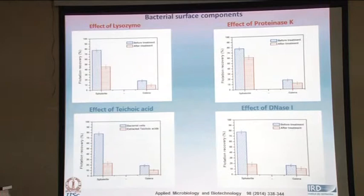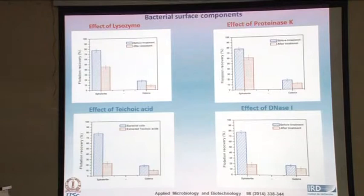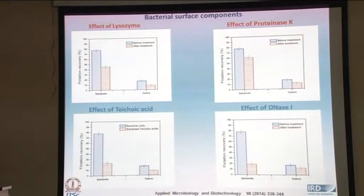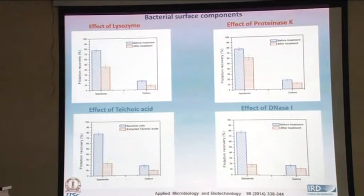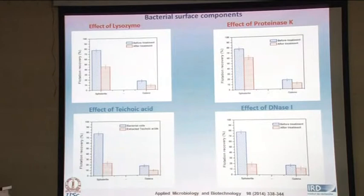When you use proteinase, which selectively dissolves the protein, again you see only a marginal decrease in flotation recoveries. For teichoic acids, there is no enzyme available, so we isolated the teichoic acid from the extracellular components and tested whether it alone could enable flotation, but it was not able to do that. What is interesting is the DNA: when treated with DNase — selectively digesting the DNA — there is a significant decrease in flotation recovery, thereby showing that the DNA component is playing a primary role in inducing hydrophobicity for flotation.